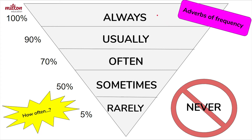Always means a person does an action very much, or 100%. Then we go down to usually, often, and sometimes means a person only does an action about 50% of the time, rarely, and then never means that a person doesn't do an action, or they do an action zero times.